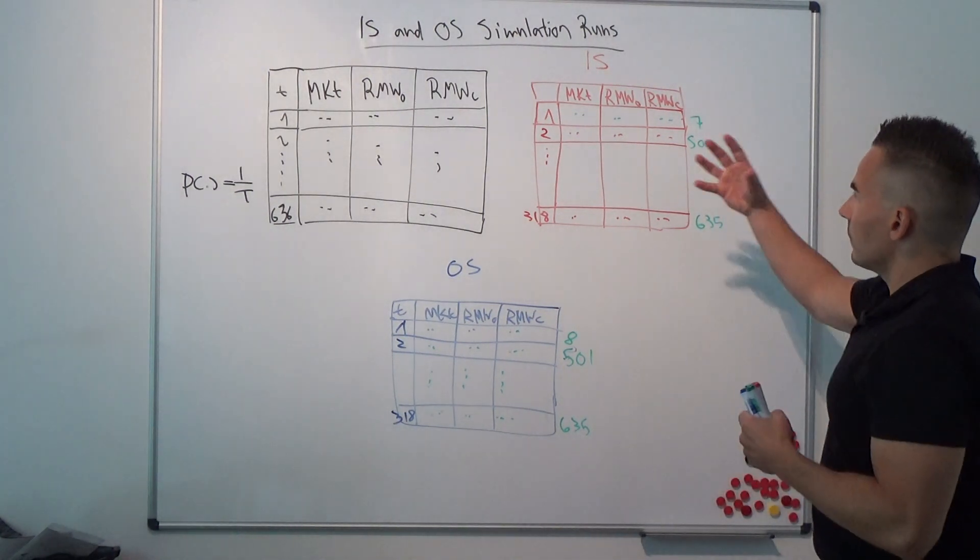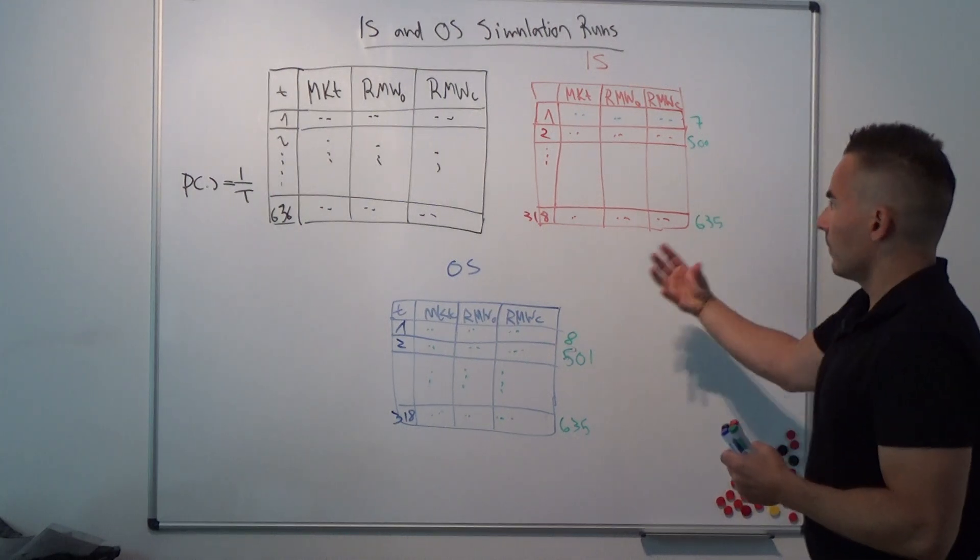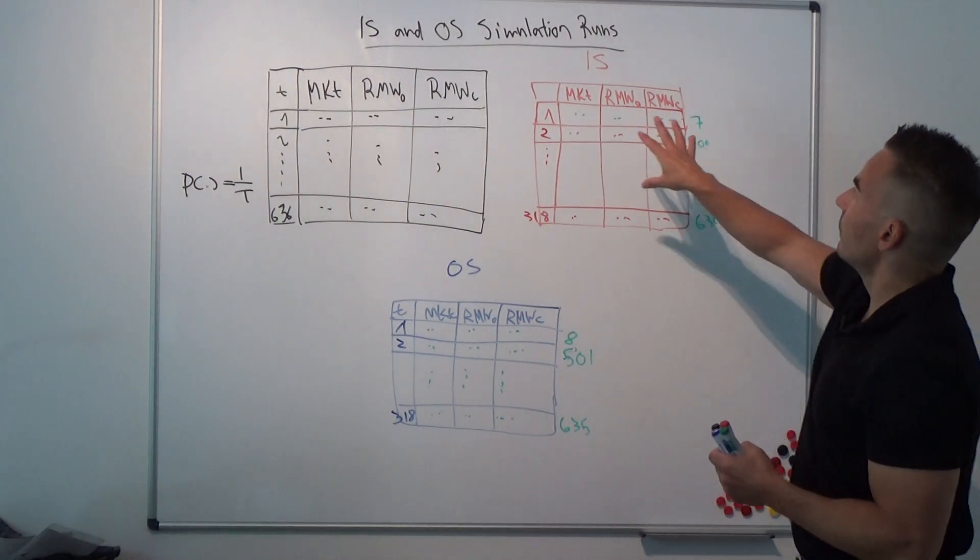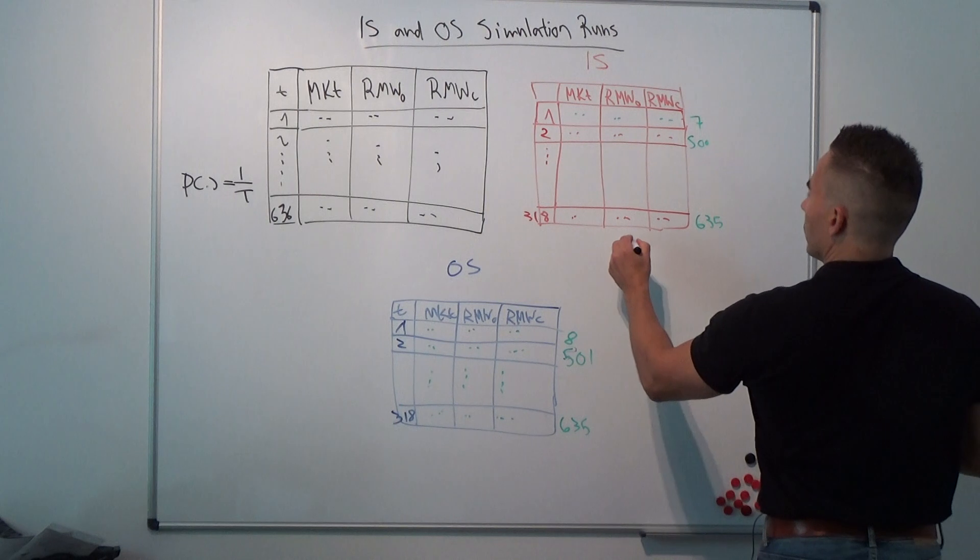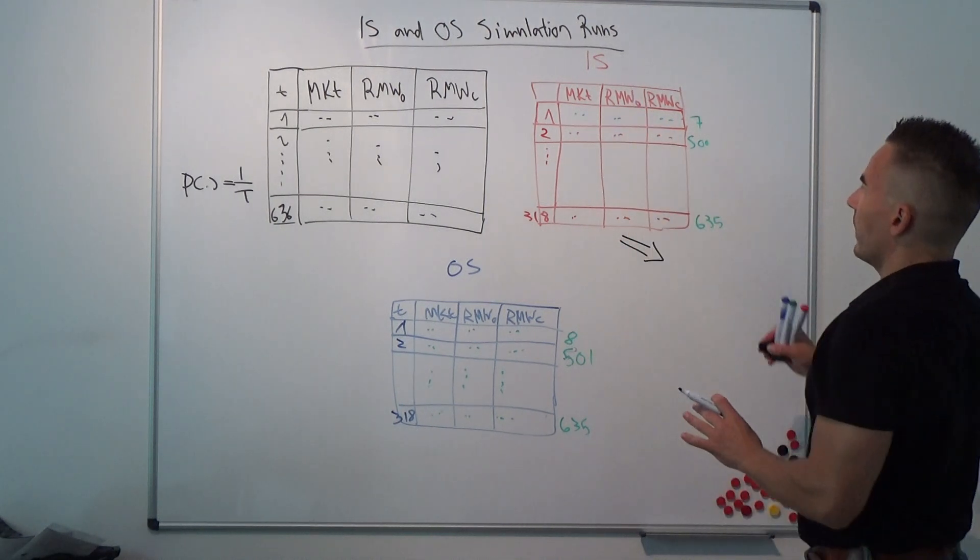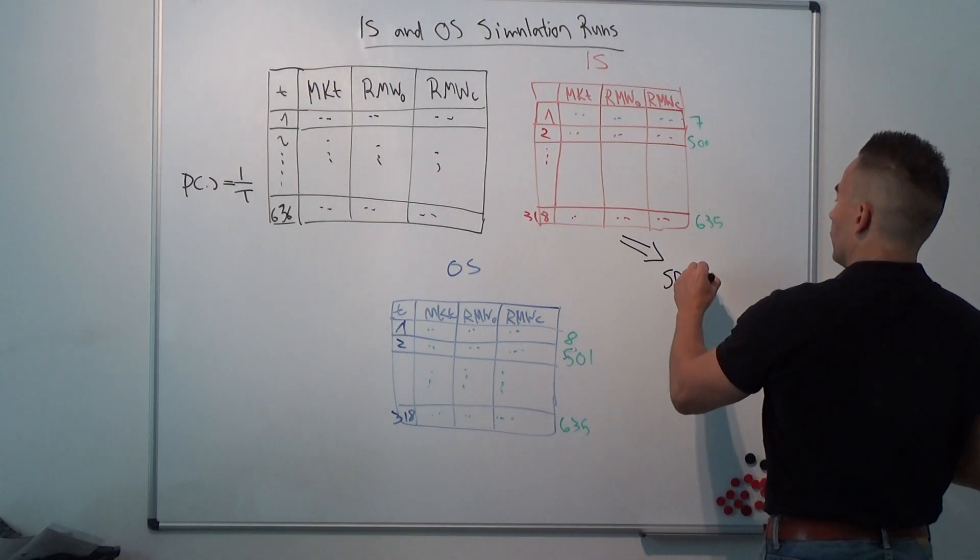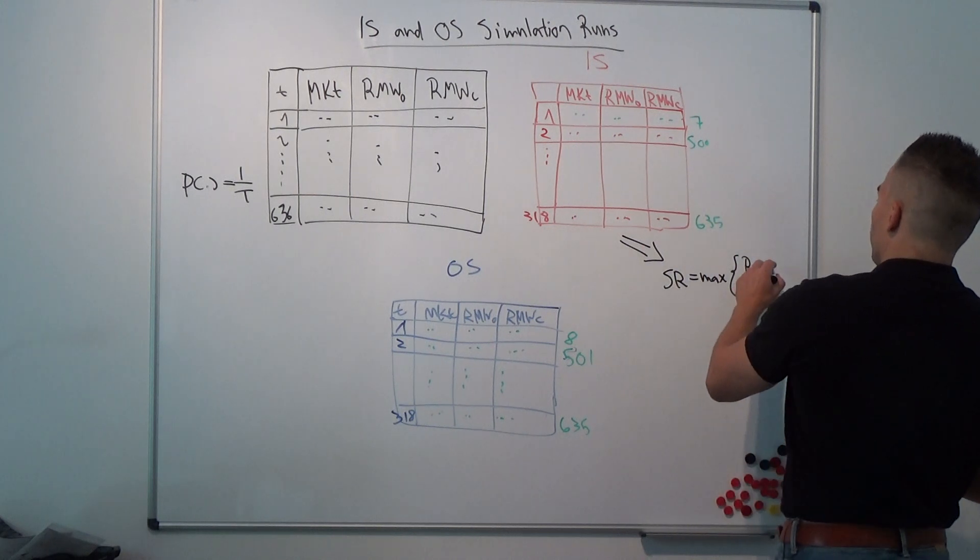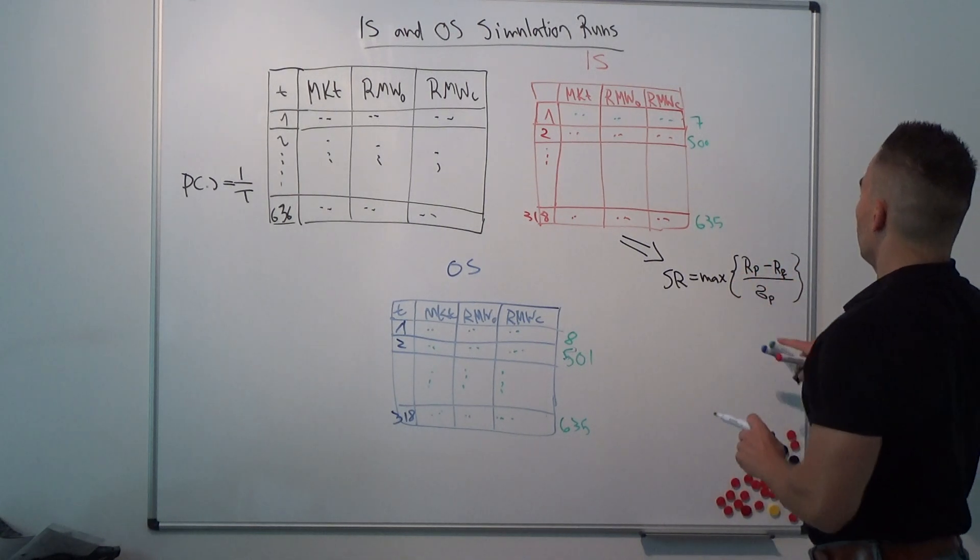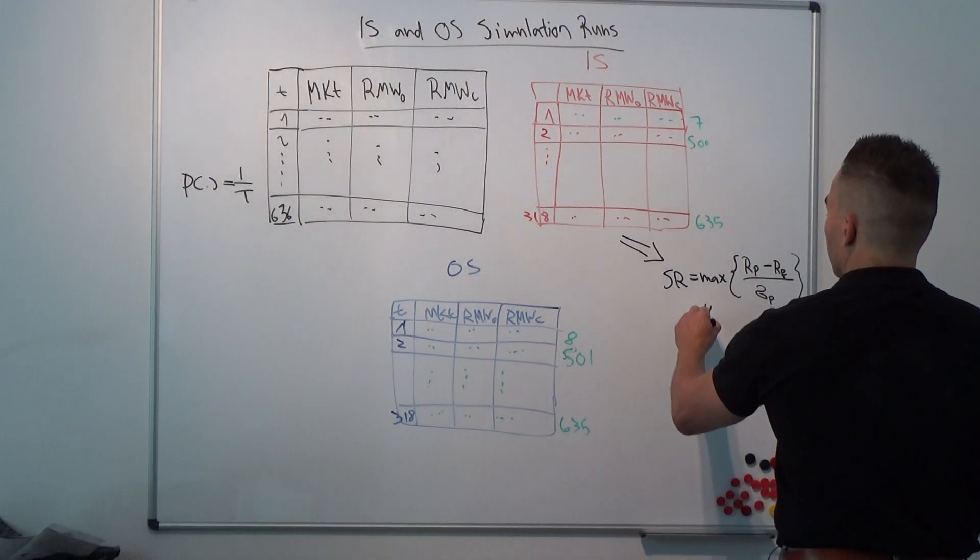Hopefully you understand this principle. Now they estimate the Sharpe ratio or the maximum squared Sharpe ratio using the in-sample. For the in-sample simulation, you can estimate the maximum squared Sharpe ratio as the corresponding portfolio return minus the risk-free rate divided by the corresponding sigma, the risk, and you get the corresponding weights, the estimated weights.